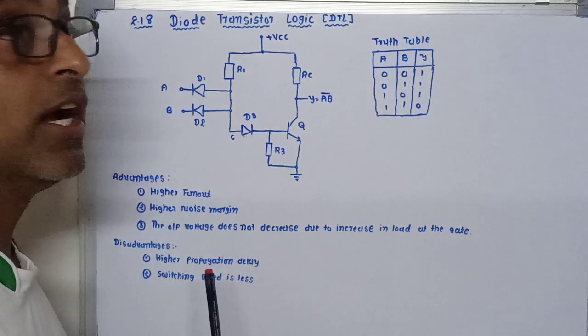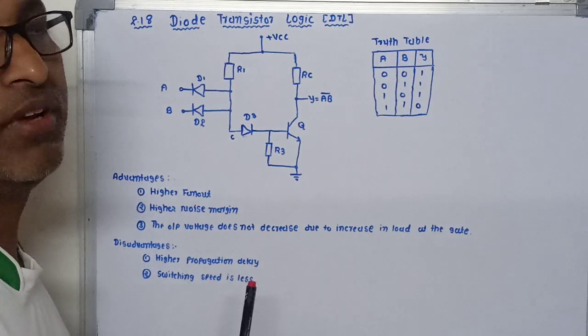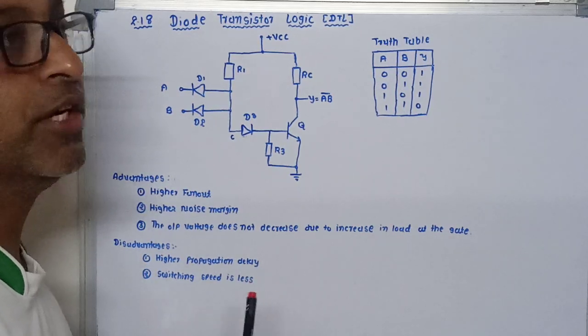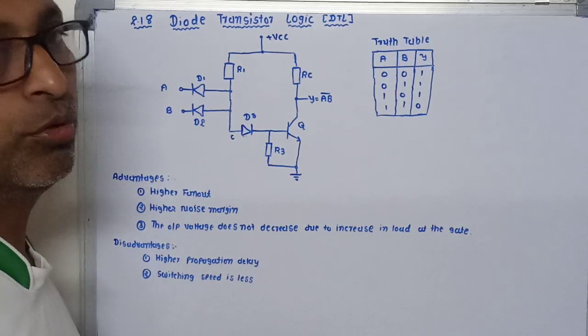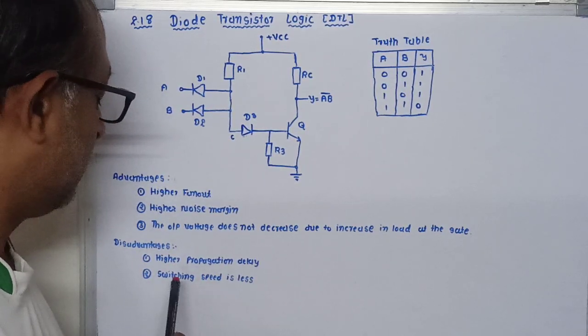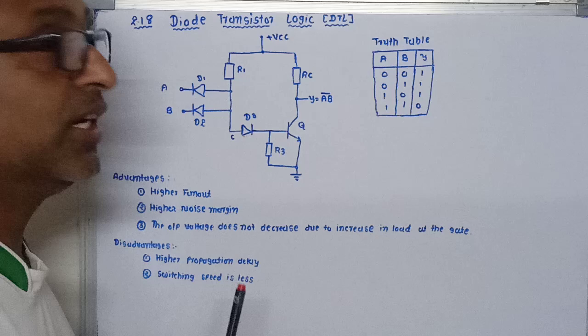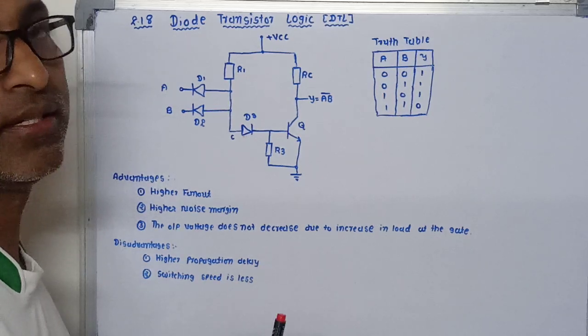Now let me see the disadvantages. Higher propagation delay. When we give an input to the gate, it requires some time to get output. Due to this reason, switching speed is very less.